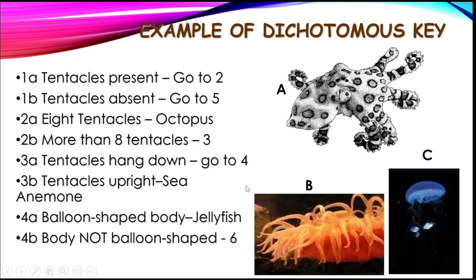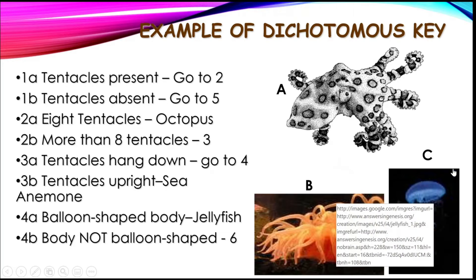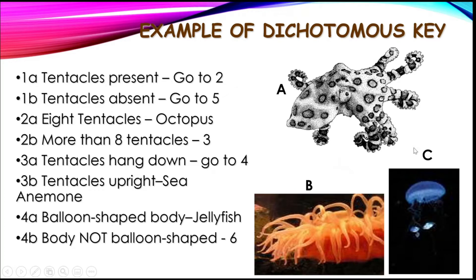We discovered the identity of organism B. Going back to the first choice for organism C: tentacles present? Yes. Go to 2, more than 8 tentacles — go to 3. Tentacles hang down? Yes. Go to 4. 4A: balloon-shaped body? Yes, its body has a balloon shape. So we identified organism C as the jellyfish. By answering every question and being directed to the next level, we identify each organism by its specific features.